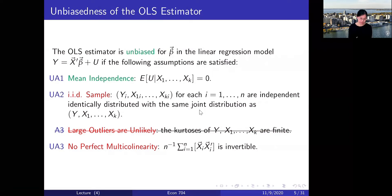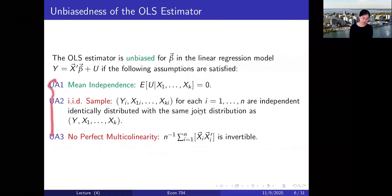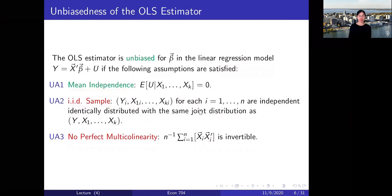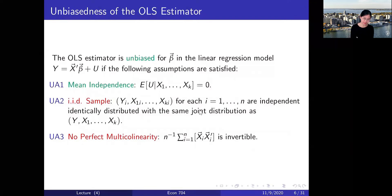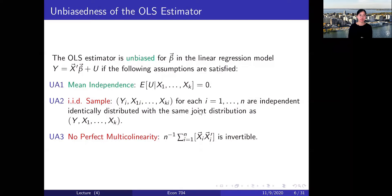To put everything together: the three assumptions that guarantee unbiasedness of the OLS estimator are mean independence, IID sample, and no perfect multicollinearity. Under these three assumptions, the OLS estimator is unbiased. We state this without proof — the proof is not super difficult but doesn't help our understanding of the model, and it is not required for any exam or problem sets.